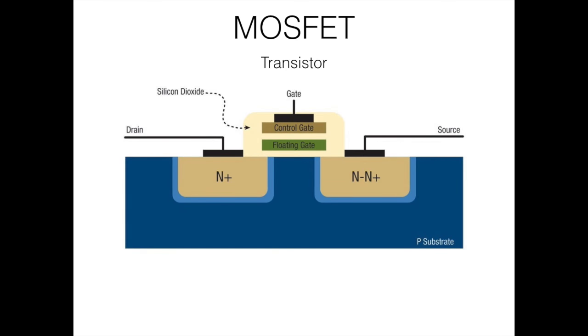MOSFET is short for metal oxide semiconductor field effect transistor. To be even more specific, it's a floating gate MOSFET or an FG MOS. An FG MOS is very very small and a whole lot of these make up the flash drive. Now you're going to learn how a MOSFET works.